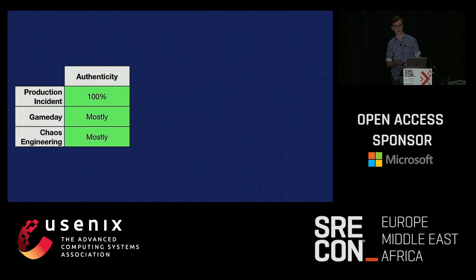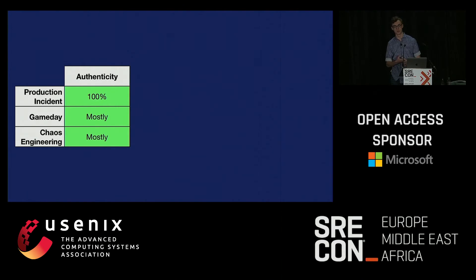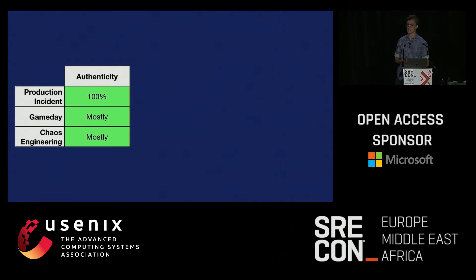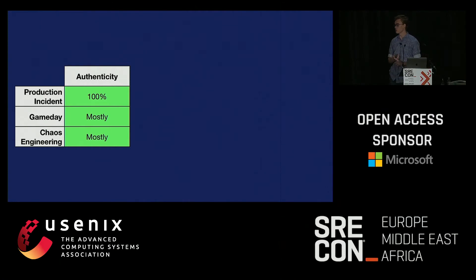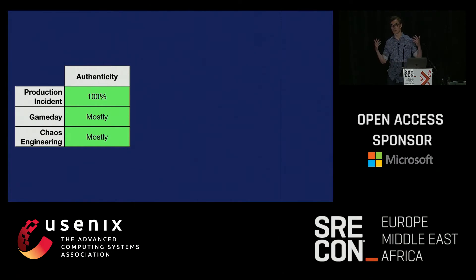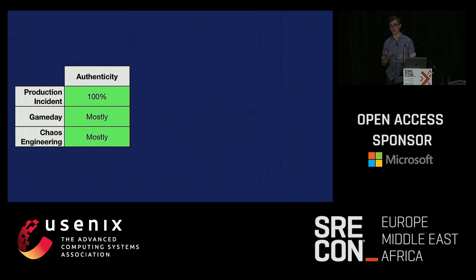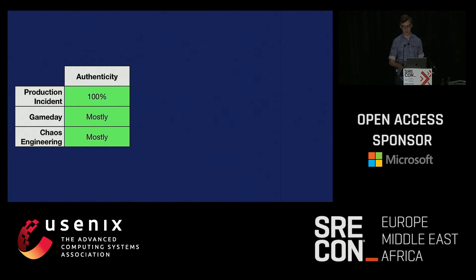If we look at these three tools, one of the most important qualities is authenticity — basically, how much does it behave like a real production incident. Zero percent authenticity would be a heavily mocked unit test, whose behavior is very different from a production incident. Production incidents are defined as 100% authentic. Game days and chaos engineering are mostly authentic because you're running in production, but less so because of the human creativity in the mix — someone had to write the chaos engineering software and choose what commands to run.